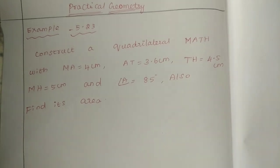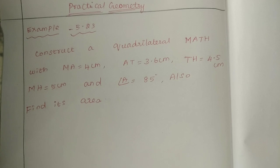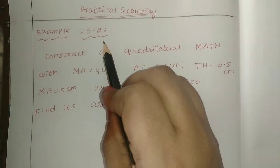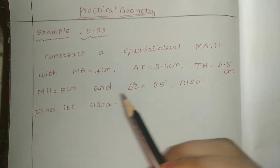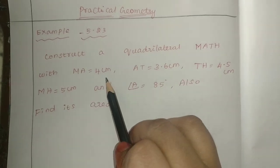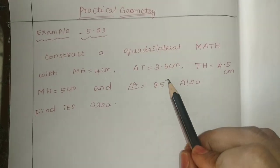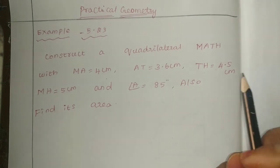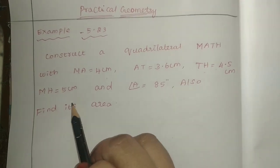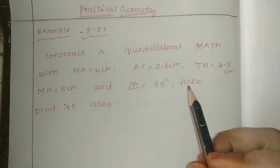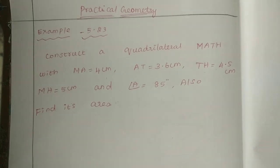Hello friends, I am Saranya. For the 8th standard maths, practical geometry, example sum 5.2.3: Construct a quadrilateral MATH with MA equal to 4 cm, AT equal to 3.6 cm, TH equal to 4.5 cm, MH equal to 5 cm, and angle A equal to 85 degrees. Also find its area.